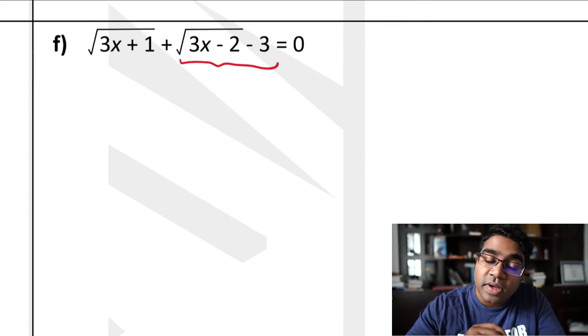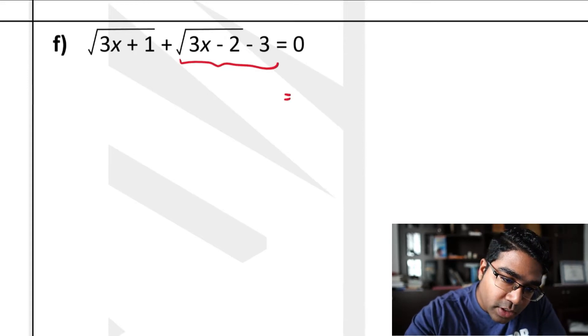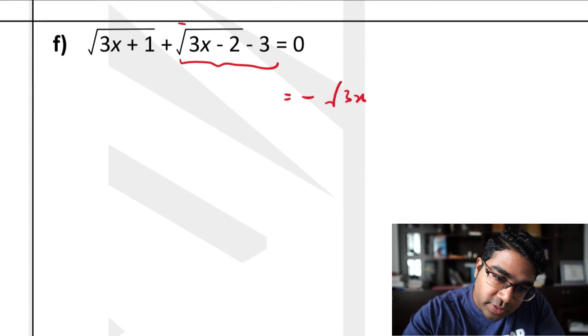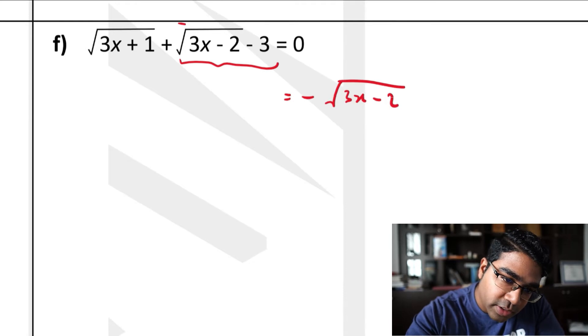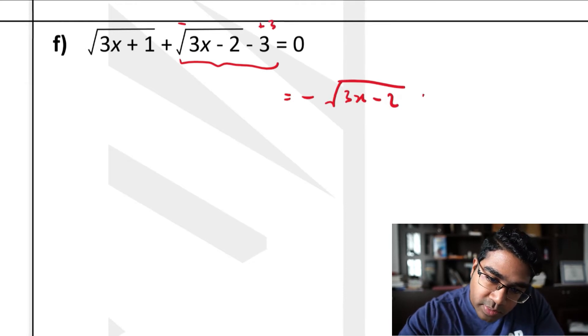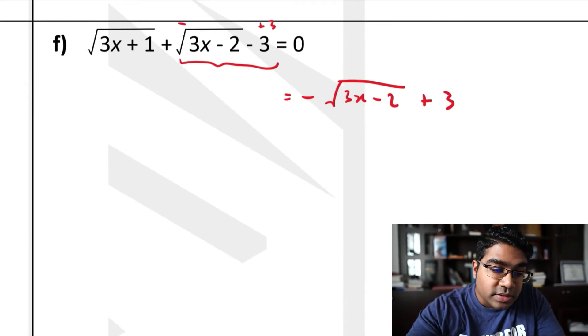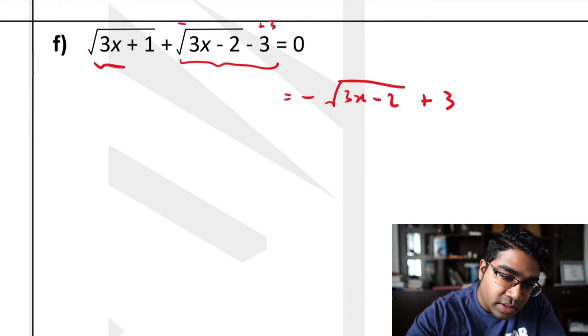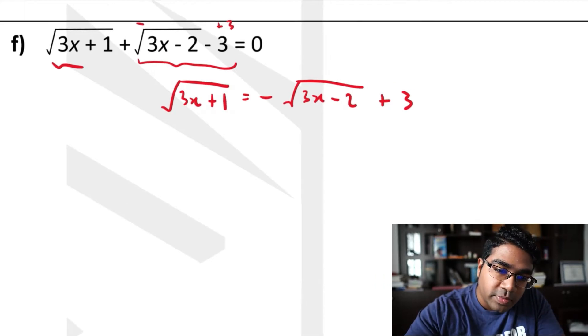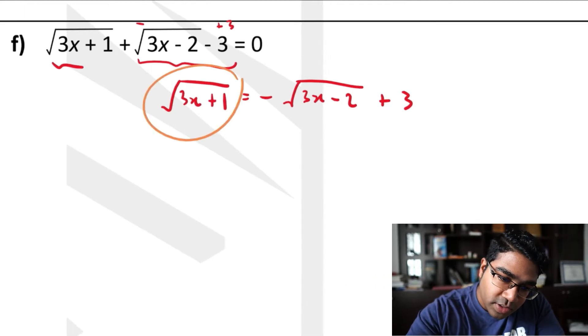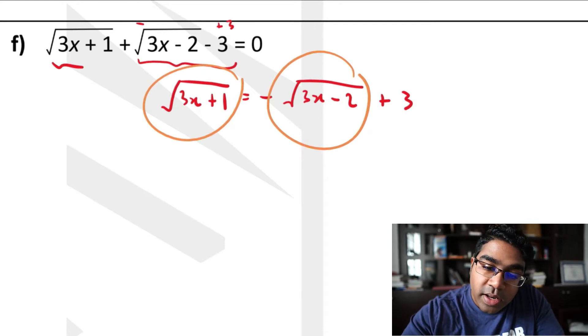So let's get rid of this from the left side of the equation. I need to subtract this, so minus √(3x-2), and then I need to add 3, plus 3. And what's left here is √(3x+1). Now you can see what we've done is we only have one square root on each side of the equation.